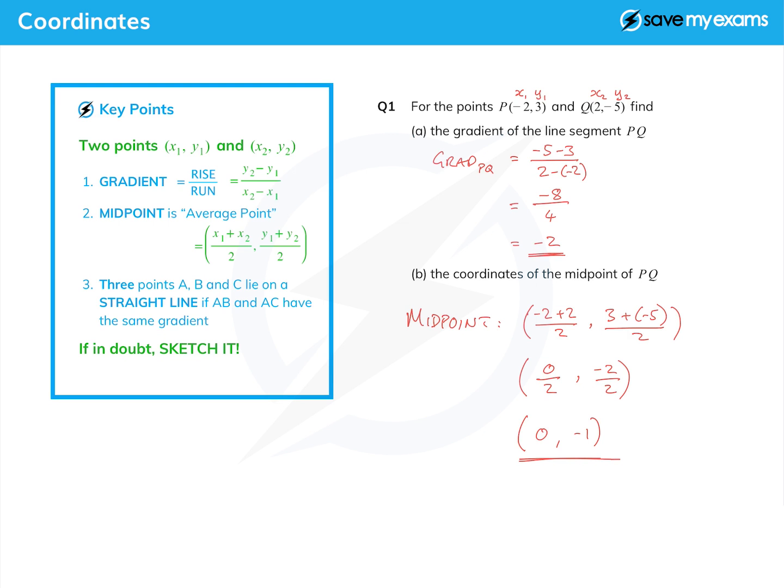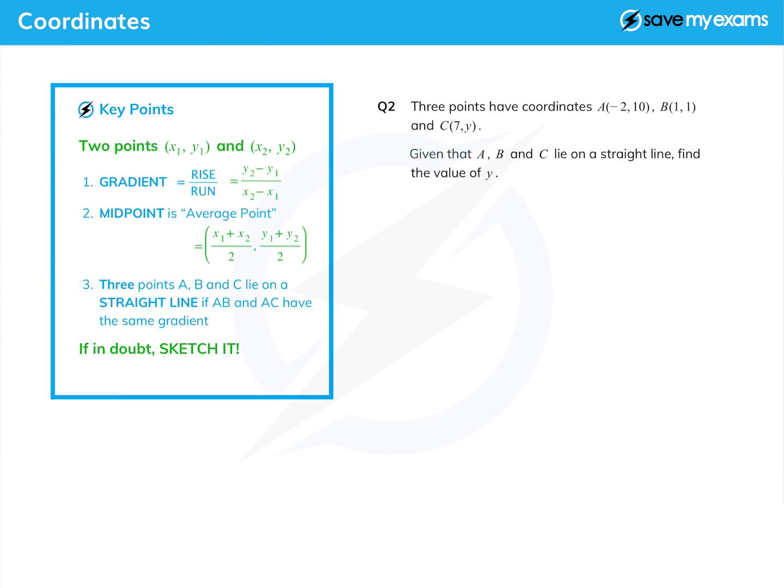Let's have a look at a slightly harder question. This time we're given three points: A (-2, 10), B (1, 1), and C (7, y), so there's an unknown here which presumably we're going to have to find. Sure enough, we're told that they lie on a straight line and we're asked to find the value of y. We're going to use the fact that the gradients of AB and AC must be equal. Let's label up our points again as we did in the first question. Let's call A x1, y1, let's call B x2, y2, and it's not a great stretch to call C x3, y3.